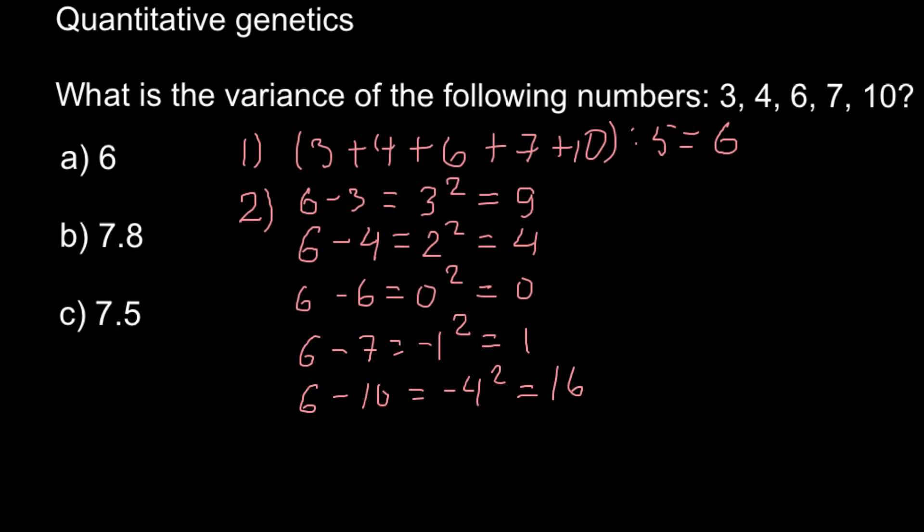And step number three. We have to add all these numbers. And this is going to be, so we have to add all these squares of deviations from the mean. So let's do it. So 9 + 4 + 0 + 1 + 16. And the answer going to be 30.